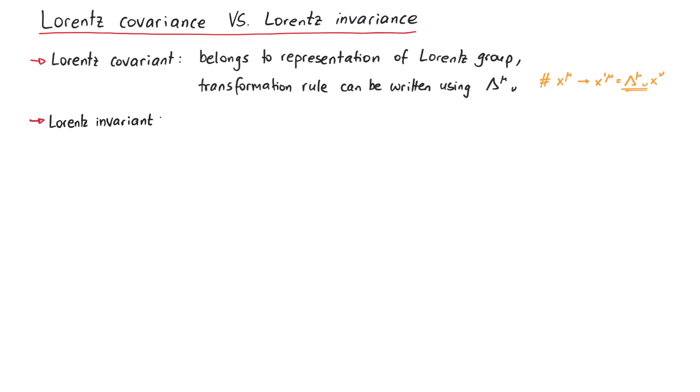A Lorentz invariant quantity is something that is invariant under a Lorentz transformation, which means it does not change when we are changing reference frames. Now let's look at some more examples.